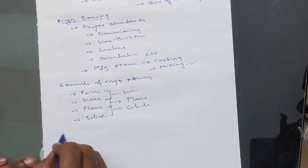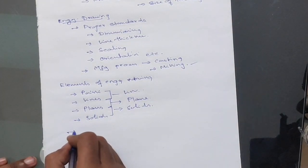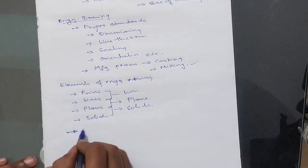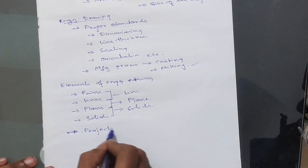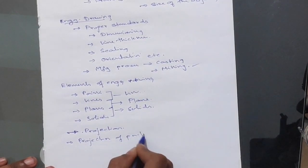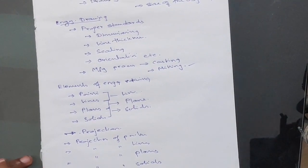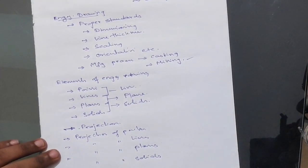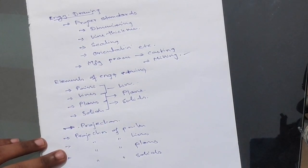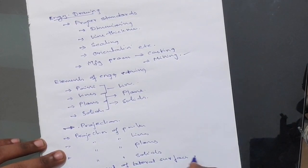We will be seeing how these points, lines, planes and solids are represented or drawn using Engineering Drawing Technique. This technique, we call it as projection. In projection, we have projection of points, we have projection of lines, we have projection of planes, we have projection of solids. Once we have understood what are projections, then we will be drawing the development of lateral surfaces of solids.